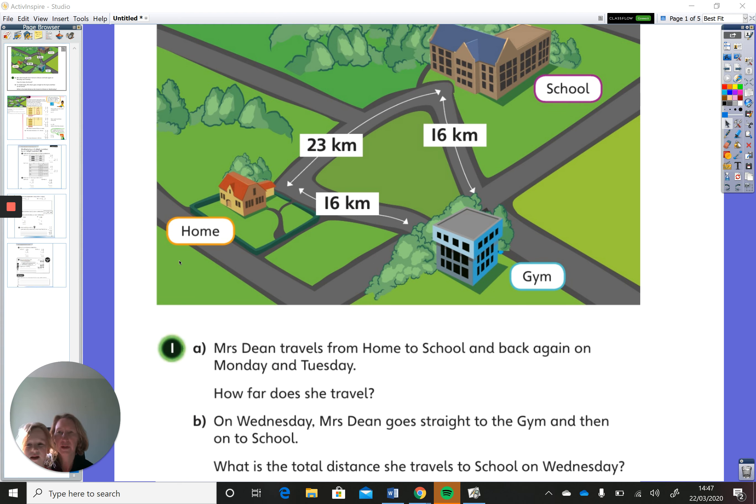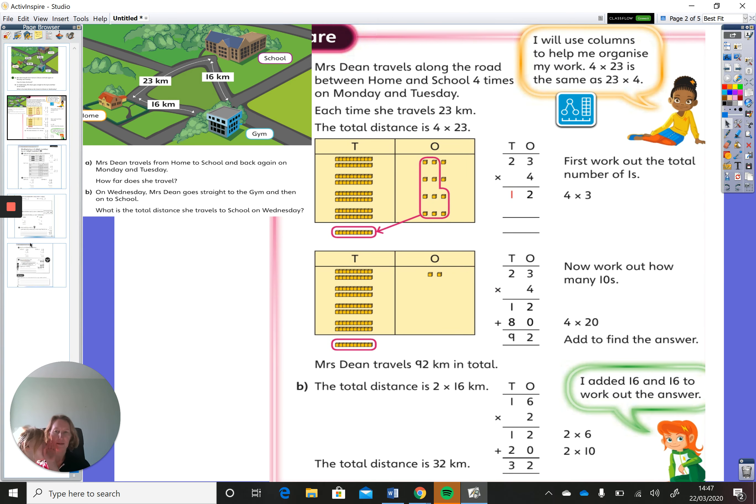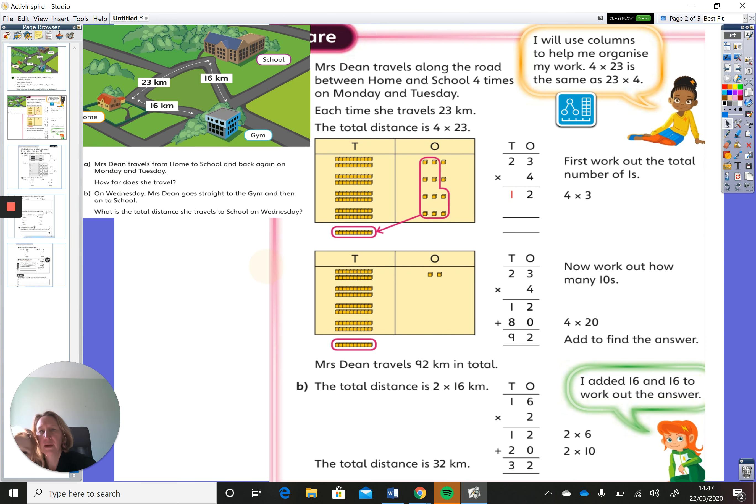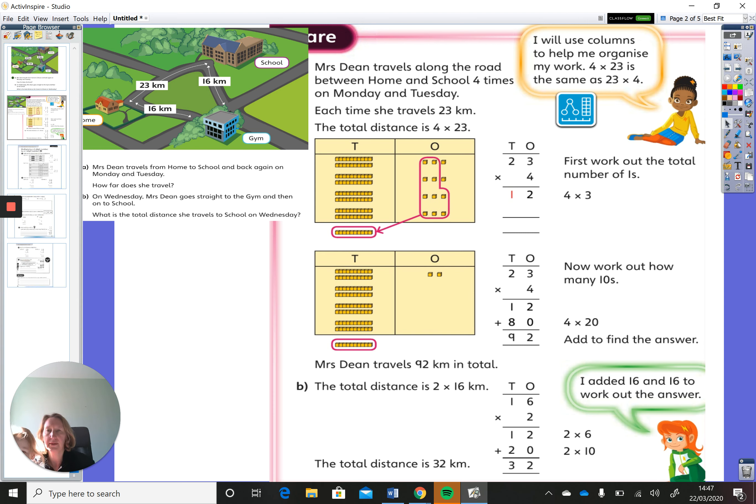And now we're going to look at what the answers are. Do you know the answer? Well you can help me because I'm not quite sure of the answer yet. So the first one, Mrs. Dean travels from home to school and back again on Monday and Tuesday. And what you have to think here is that she is going from home.